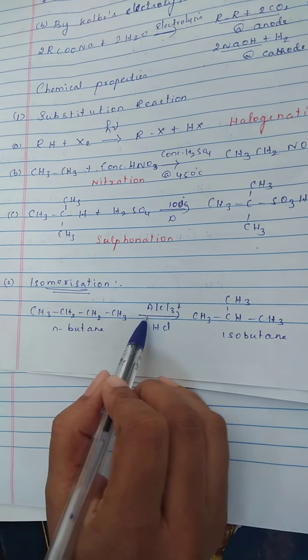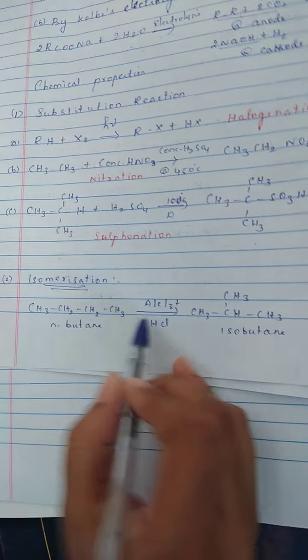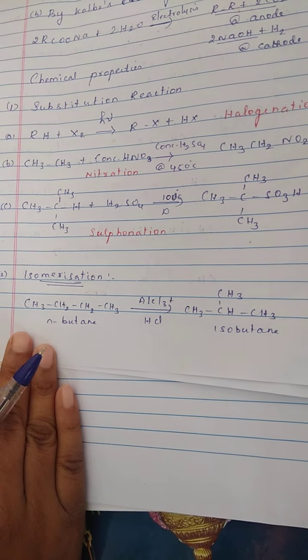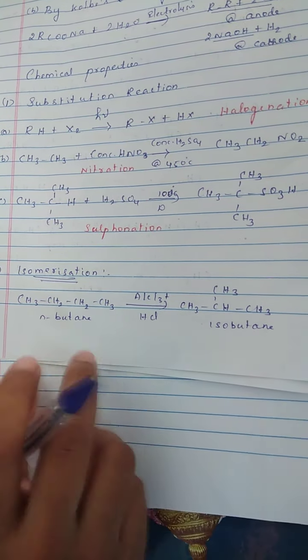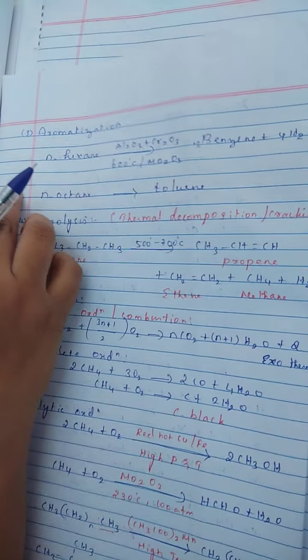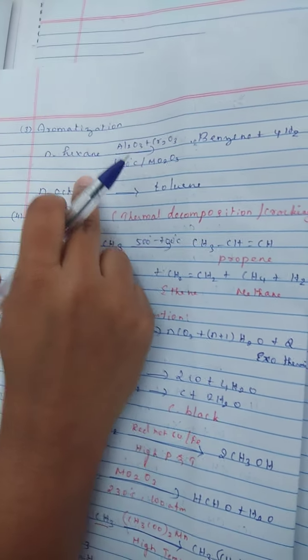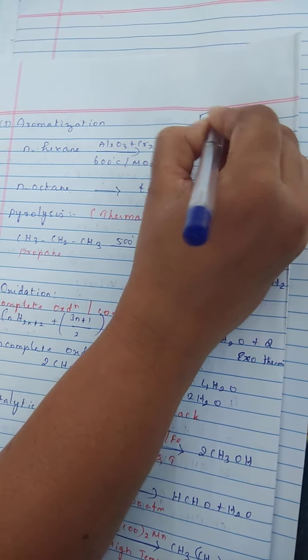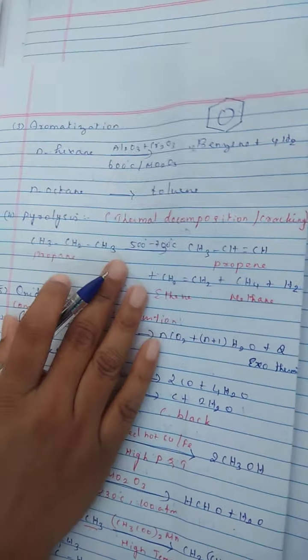N-butane is changed in presence of Lewis acid — either AlCl3 or FeCl3 as a catalyst. In presence of these Lewis acids, we can convert N-butane into isobutane — this is the example of chain isomerism. Like this we can get position as well as chain isomers using Lewis acid. Next is aromatization — a linear compound is converted into an aromatic compound. That is, N-hexane, a linear chain with six carbons, is converted into a ring structure — benzene structure.